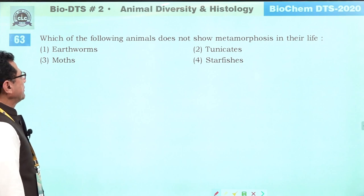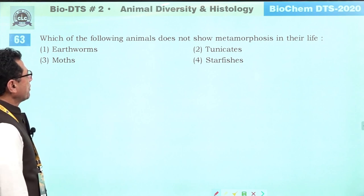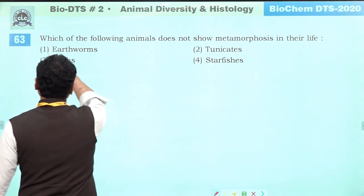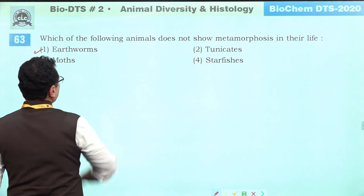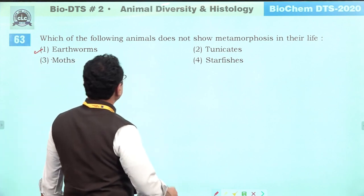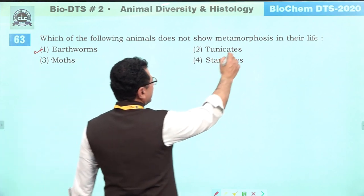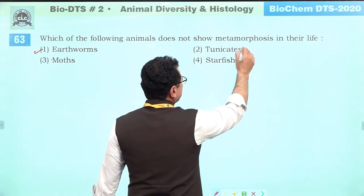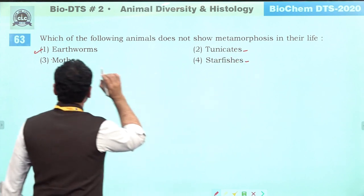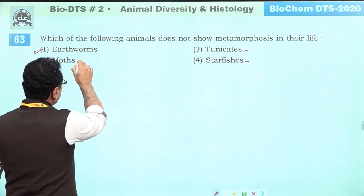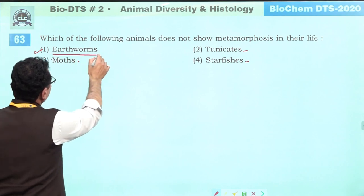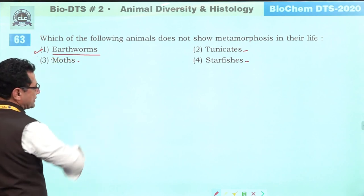Which animal does not show metamorphosis? Earthworms do not show metamorphosis — they have direct development; eggs give rise to juveniles. Tunicates have tadpole larvae. Starfishes have various larval types. Moths have larvae. Metamorphosis is absent only in earthworm. Correct answer is one.